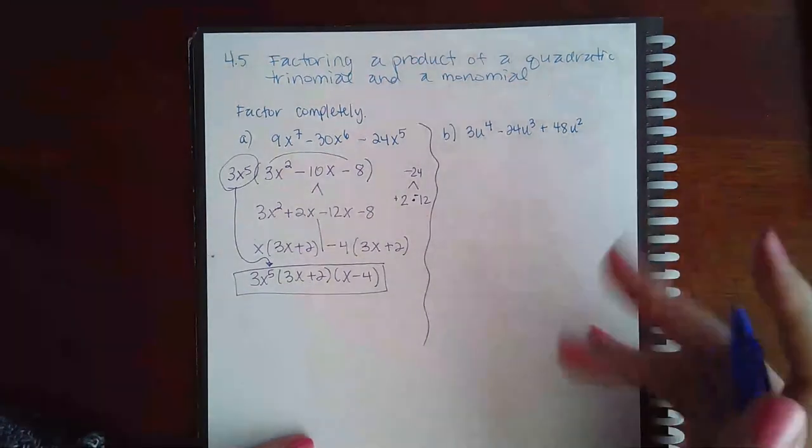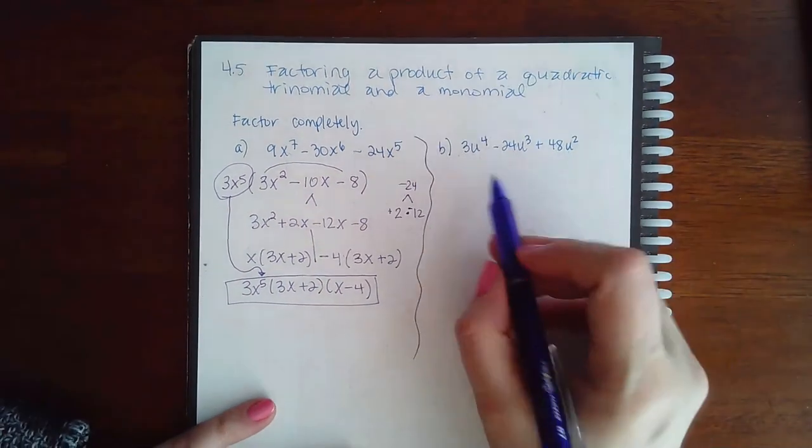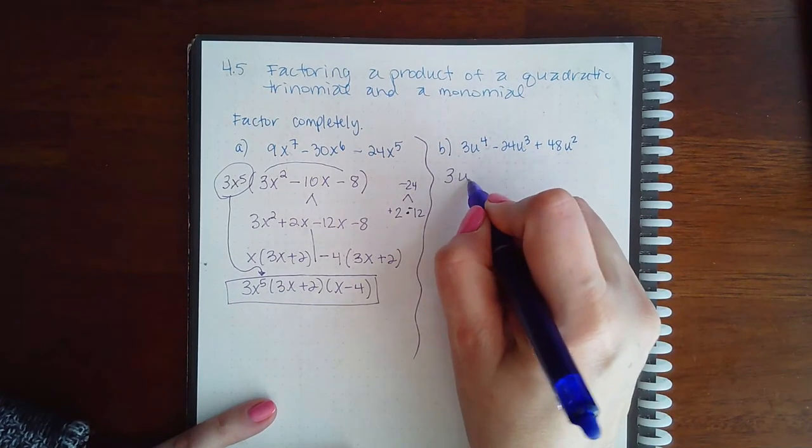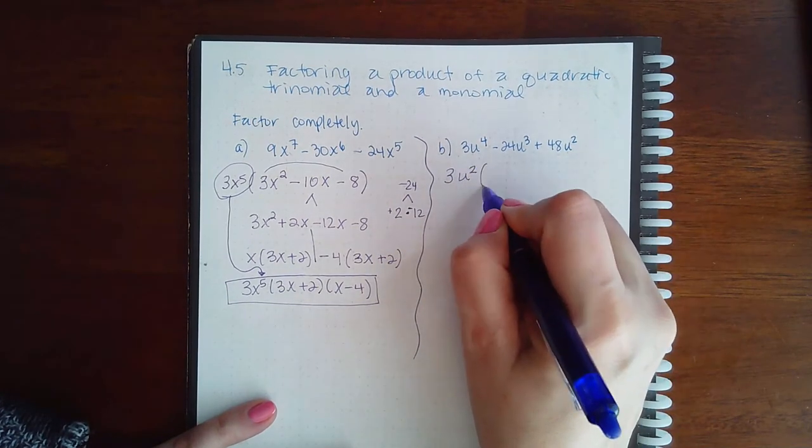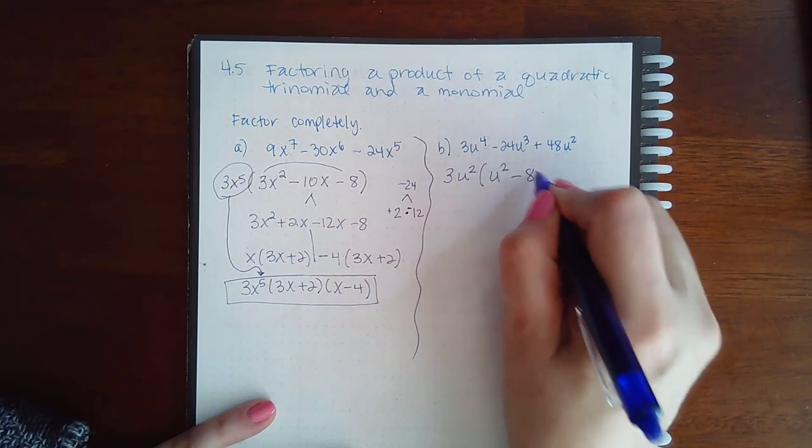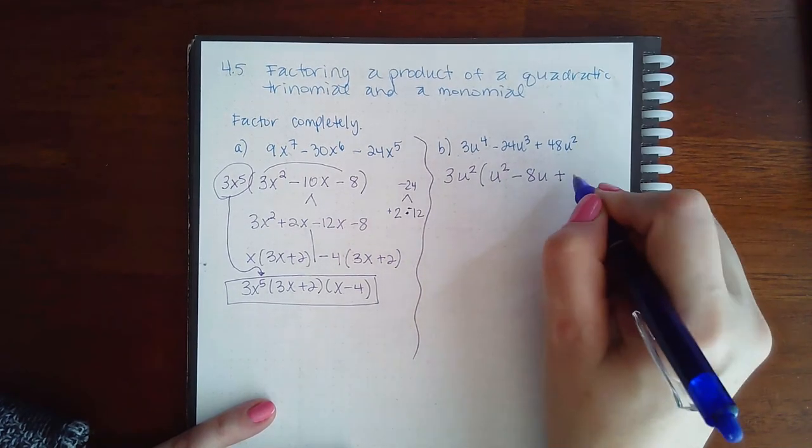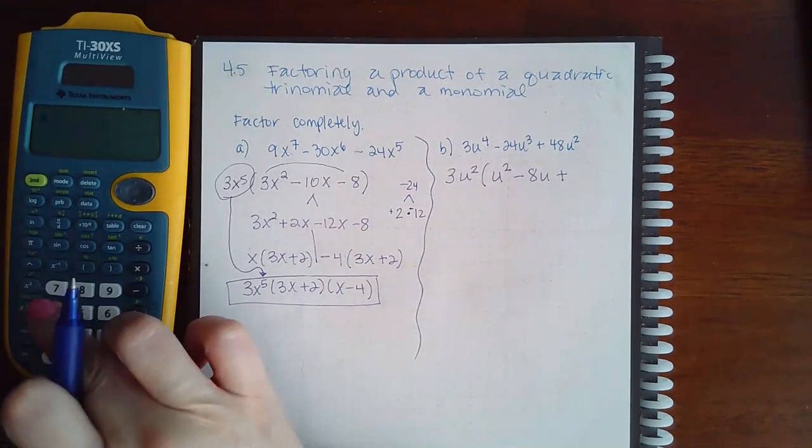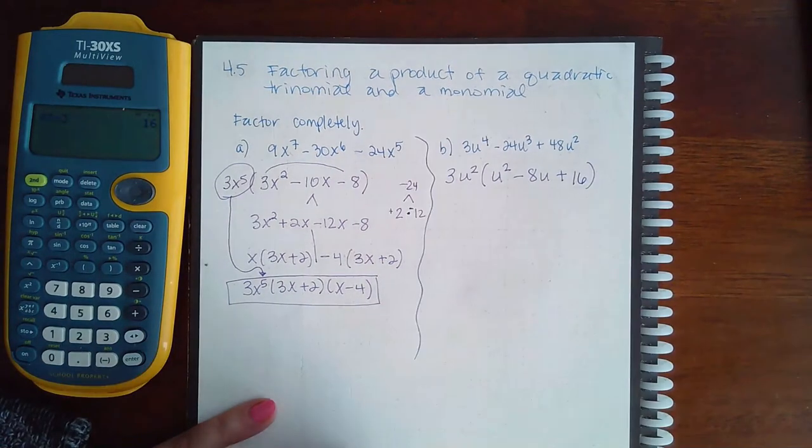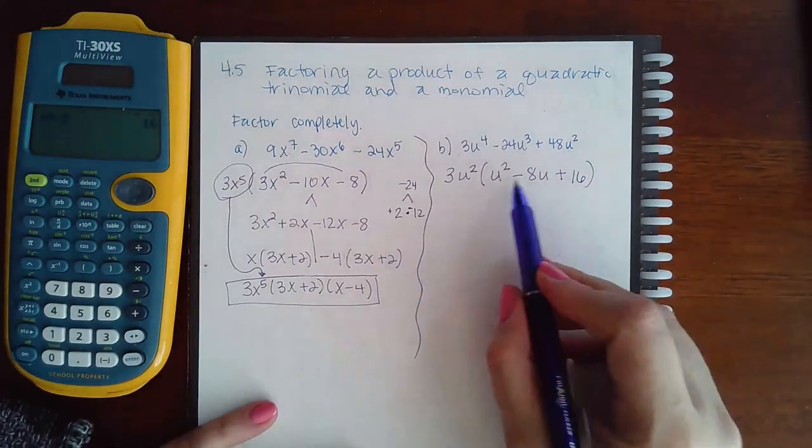So similarly with this example, we're going to go ahead, all of those can be divided by 3 and u with the smallest exponent would be squared. So here u squared minus 8u plus I believe that's 16, but let me verify. 48 divided by 3, yes is 16, and the u squared is gone.